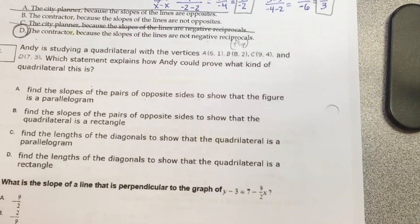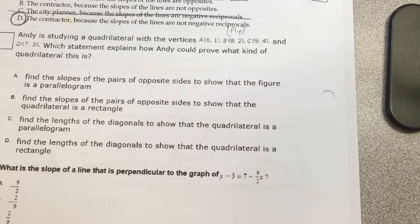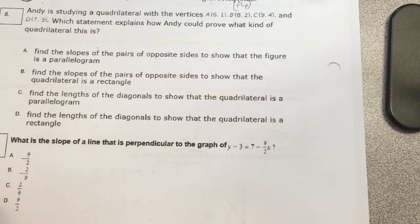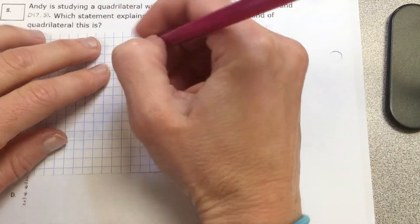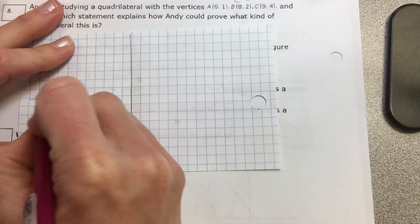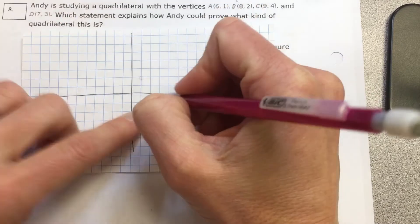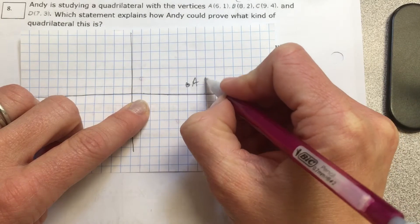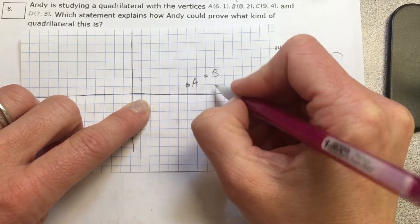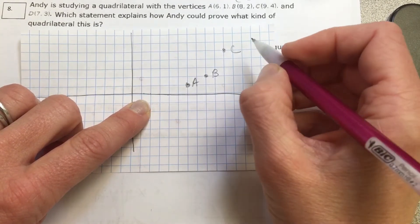Andy is studying a quadrilateral with the vertices A, B, C, D. Which statement explains how Andy could prove what kind of quadrilateral this is? Please tell me what you're going to do when you see this question on the benchmark. Graph it immediately. You're going to graph it. So if you will please look up here. 6, 1 - that's A. 8, 2 is B. 9, 4 is C.